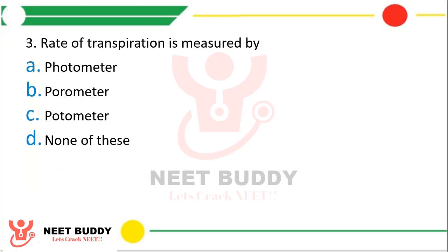Question 3: Rate of transpiration is measured by — option A: photometer, option B: porometer, option C: potometer, option D: none of these. The correct answer is option B, porometer.